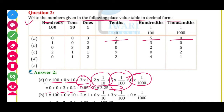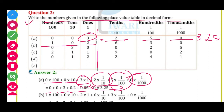Aap seedha bhi answer likh sakte ho. Dekho, ones ke baad point hota hai — 10th place se point hota hai. Ones mein 3, so answer is 3, point, phir 2 and 5. So 3.25. Second ka answer hoga 102.63.